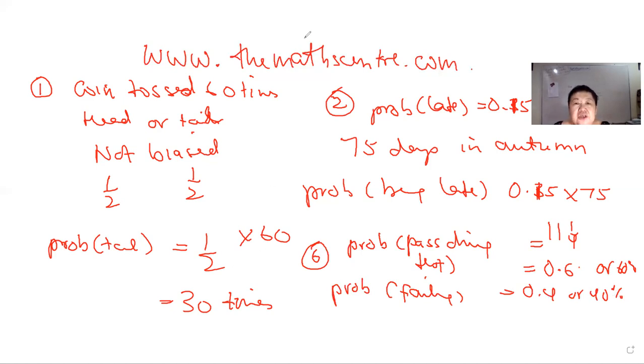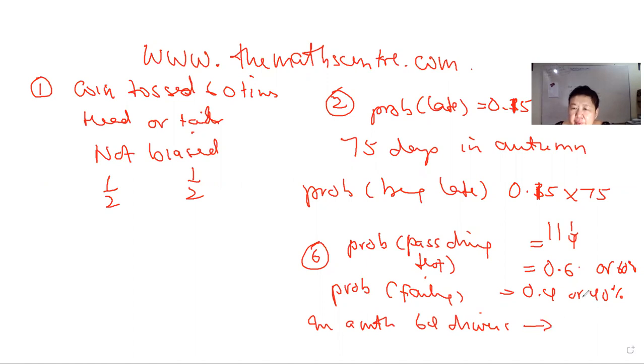Now, in one particular month, she has failed 64 drivers. So these 64 drivers represent the probability of failing of 0.4 or 40%. The question is: how many people took the test? How many took the test means 100% of the sample size—that includes drivers who both pass and fail in that particular month. This is equivalent to 100%—remember, it's 60% plus 40%, which is 100%. You either pass or fail.